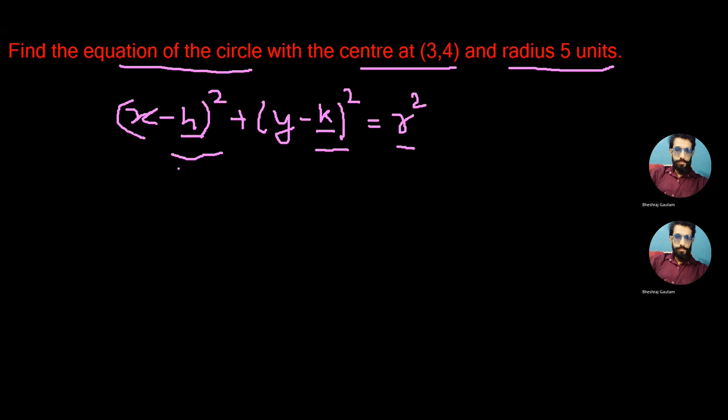In our equation, the value of h is given as 3, k is 4, and the radius is 5 units.